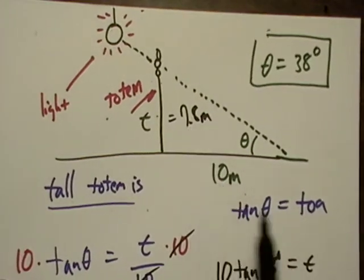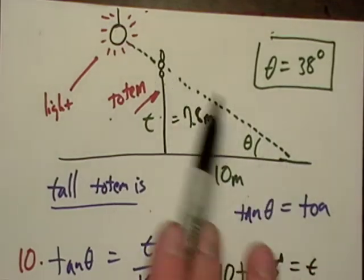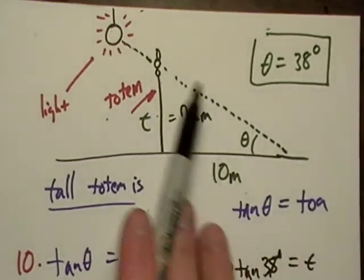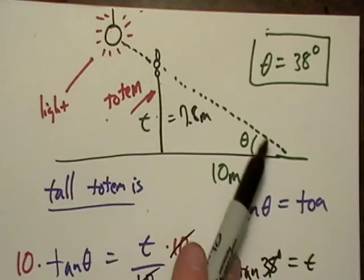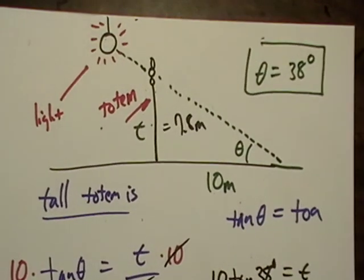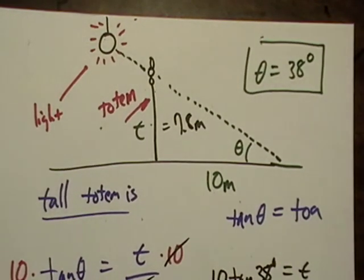And now we can go and do the Pythagorean theorem and find out this if we want. But we don't care. It's just air here. There's nothing here except a beam of light. So, there's that one. That's not too bad, is it?